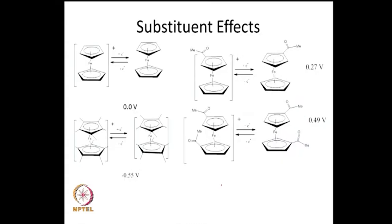There are some effects of substituents on the cyclopentadienyl ring. I have shown four different molecules with respect to ferrocene. The electrode potential of the ferrocene/ferricinium couple is marked as 0 volts. If we add a very electron-donating substituent such as a methyl group — in this case 10 methyl groups, five on each cyclopentadienyl ring — the molecule becomes very difficult to reduce. It requires about minus 0.55 volts with respect to ferrocene to reduce the cationic species to the neutral species. This is a single electron transfer.